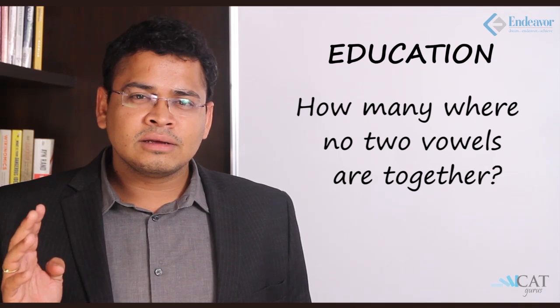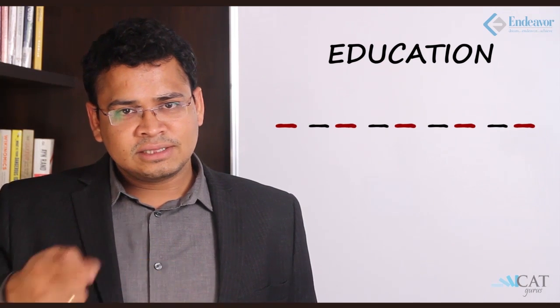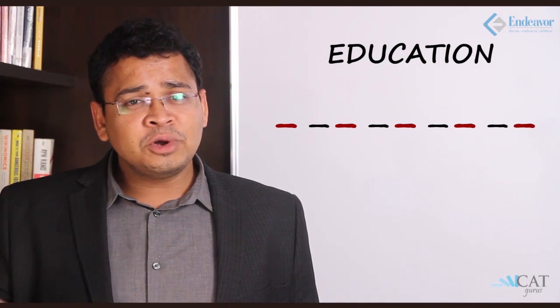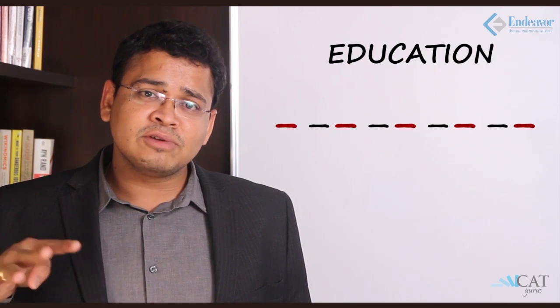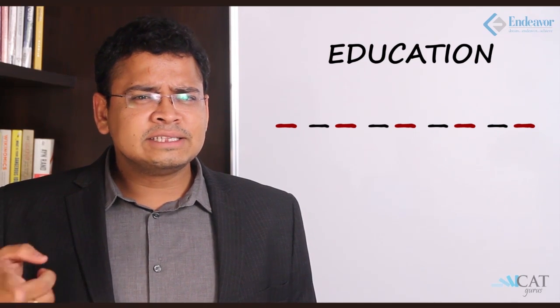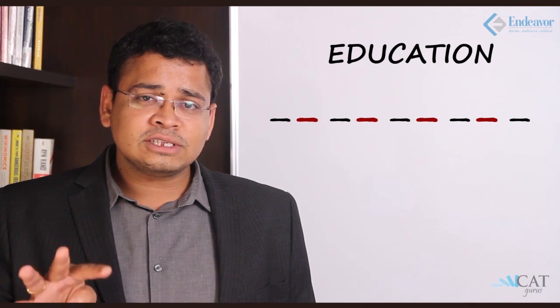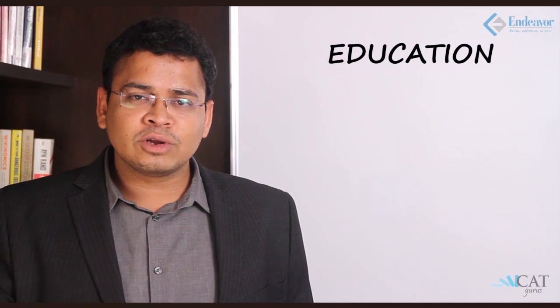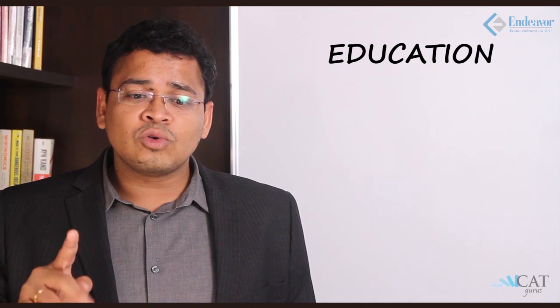For the question where no two vowels are together: since 'education' has five vowels, we must place them in alternate positions. The only way is positions 1st, 3rd, 5th, 7th, and 9th — so the four consonants fit in between the vowels. The five vowels can be arranged in five factorial ways, and the four consonants can be arranged in four factorial ways in between. So the answer is five factorial into four factorial.